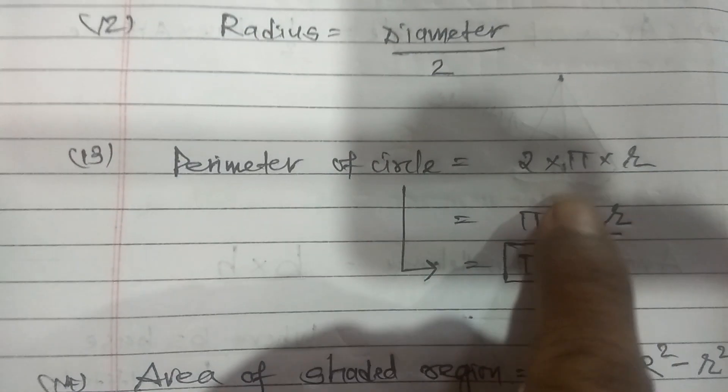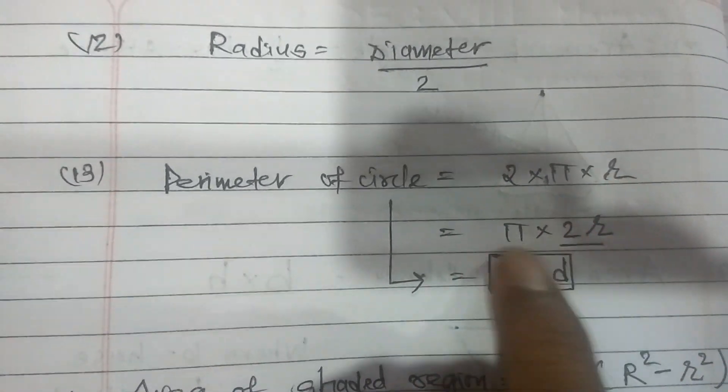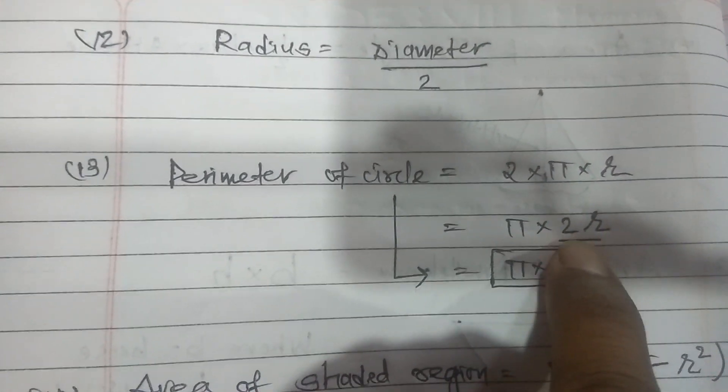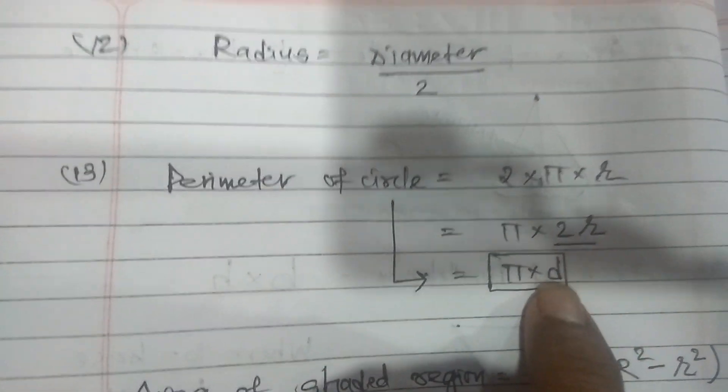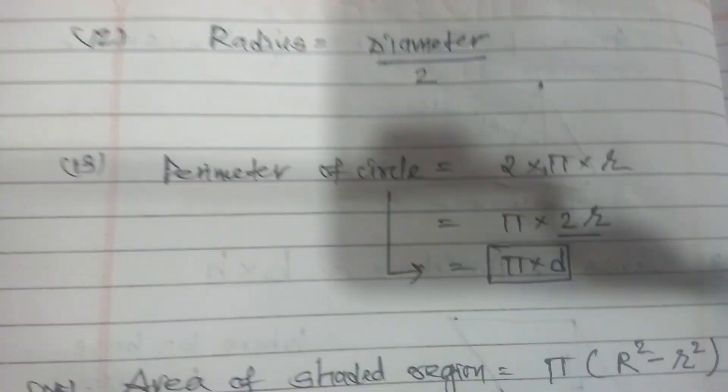You can see, just now we have made the relation that diameter D is equal to 2 into R. So pi 2 into R, when put together, what is 2 into R? Diameter. So pi into D also. So perimeter of circle is equal to pi into D.